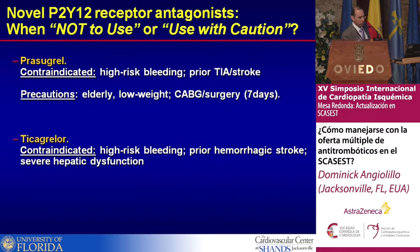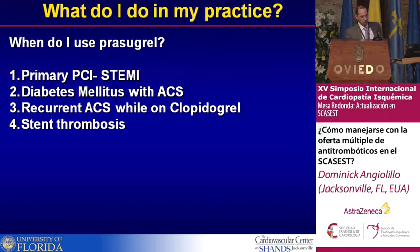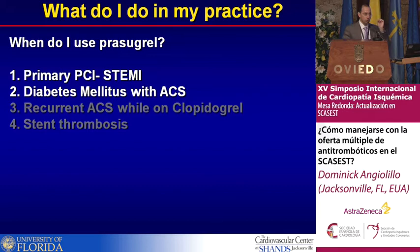There are a series of precautions I won't go through all of these — be especially aware of bradycardia and dyspnea. In my opinion the most important is compliance, because ticagrelor is a twice-daily drug. So what do I do in my practice? When do I use prasugrel? All these are patients at high risk for thrombotic events: patients undergoing primary PCI, diabetics, recurrent ACS while on clopidogrel, and stent thrombosis. I'll speak briefly on why I use a specific drug in specific scenarios.